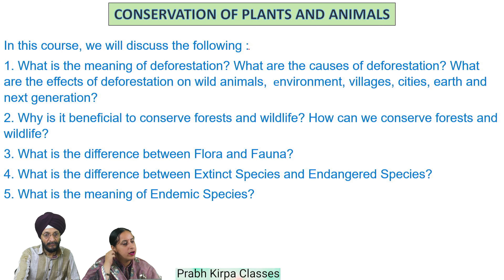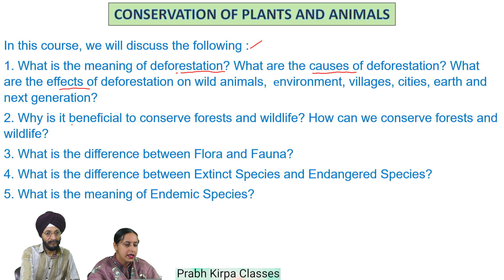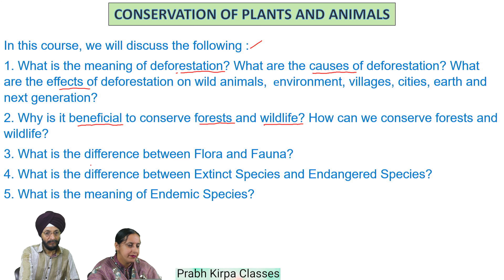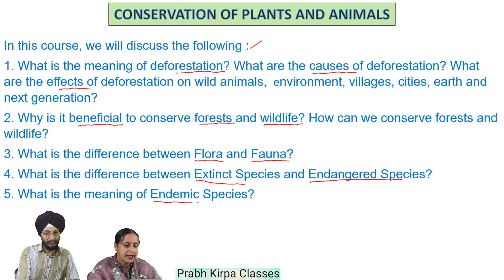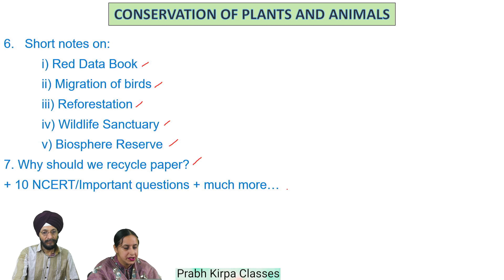In this course, we will discuss the following: what is the meaning of deforestation, its causes, and its effects on wild animals, environment, villages, cities, earth and next generation. We will also cover why it is beneficial to conserve forest and wildlife, the difference between flora and fauna, extinct and endangered species, endemic species, and short notes on Red Data Book, migration of birds, wildlife sanctuary, biosphere reserve, why we should recycle paper, plus NCRT important questions and much more.